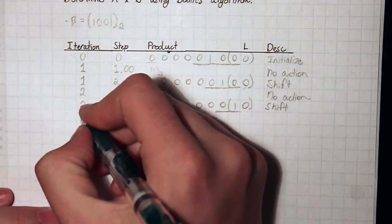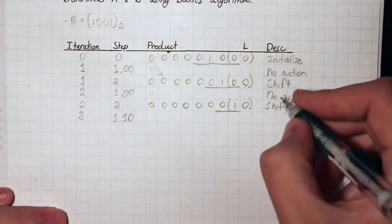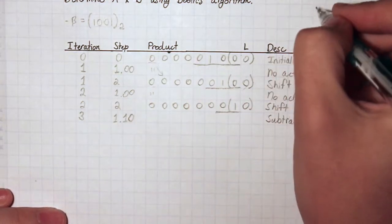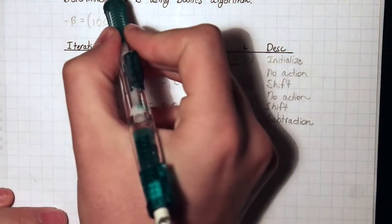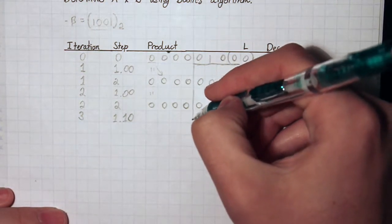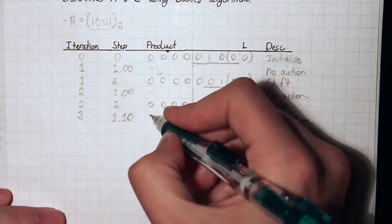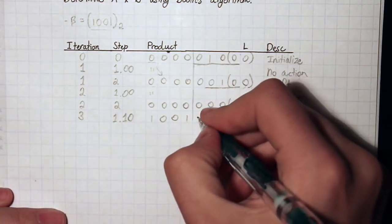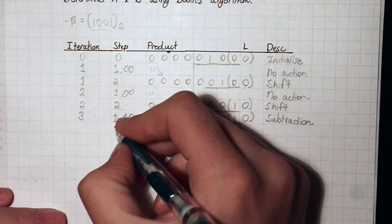Iteration 3: our step is now 1.10, because we have a 1,0 sequence, so this is a subtraction. To subtract, we add our negative multiplicand — negative B in two's complement — to the left half of the product register. We add 1001 to 0000, which gives us 1001. We copy the right half of the product register as usual and re-underline the multiplier.